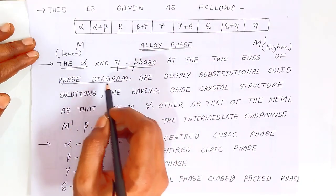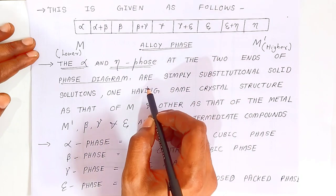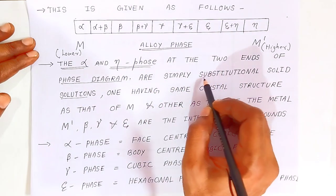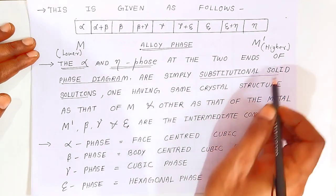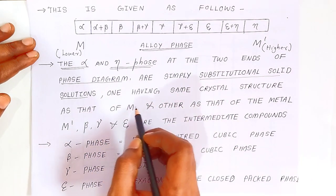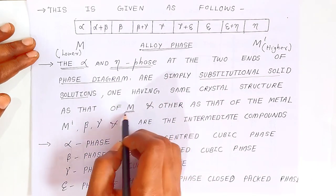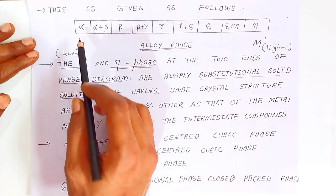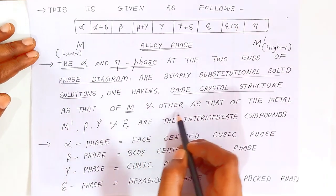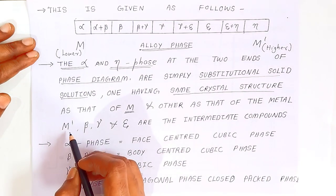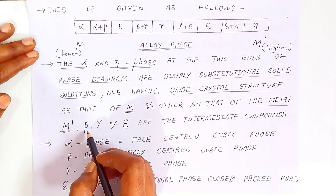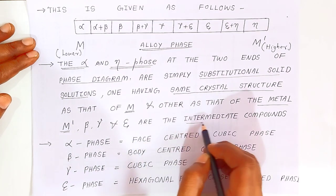Alpha and eta phases are simply substitutional solid solutions. They will form substitutional solid solutions — one having the same crystal structure as that of M. The beta, gamma, and epsilon are the intermediate phases.